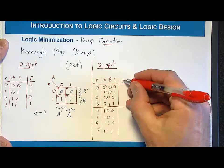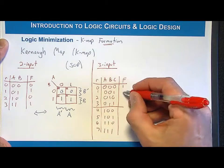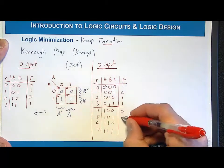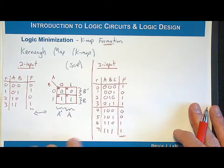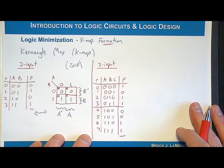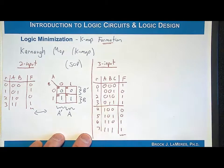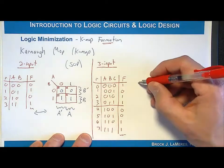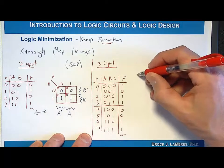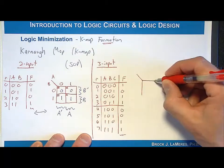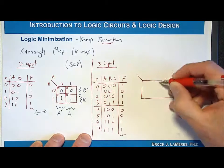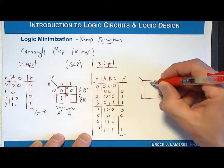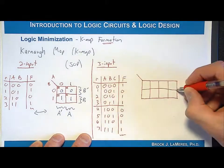Let's say the output F is 1, 0, 1, 1, 0, 0, 1, 1 — just some arbitrary example outputs. To create a K-map grid with eight cells, I'm going to have four columns and two rows, so I get eight cells, each corresponding to one of the rows of the truth table. I'll put the input variables up here, comma-delimited: A, B across the top and C on the side.